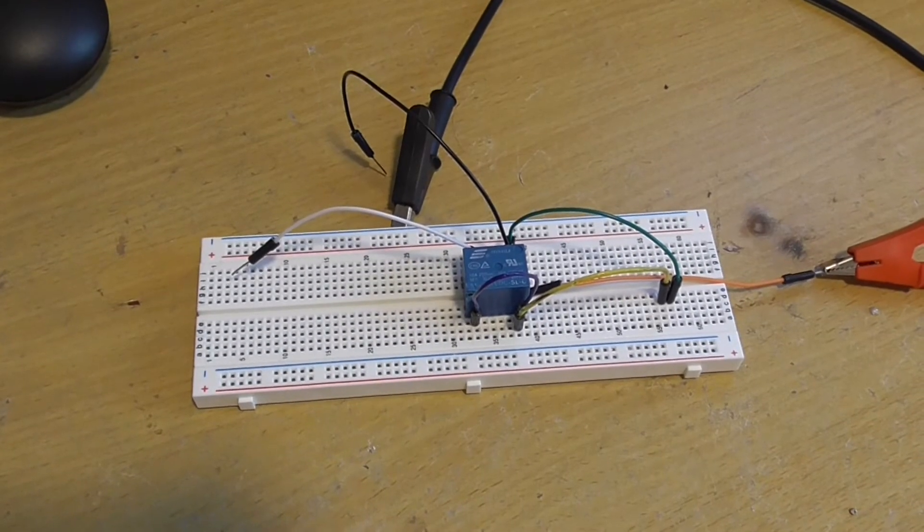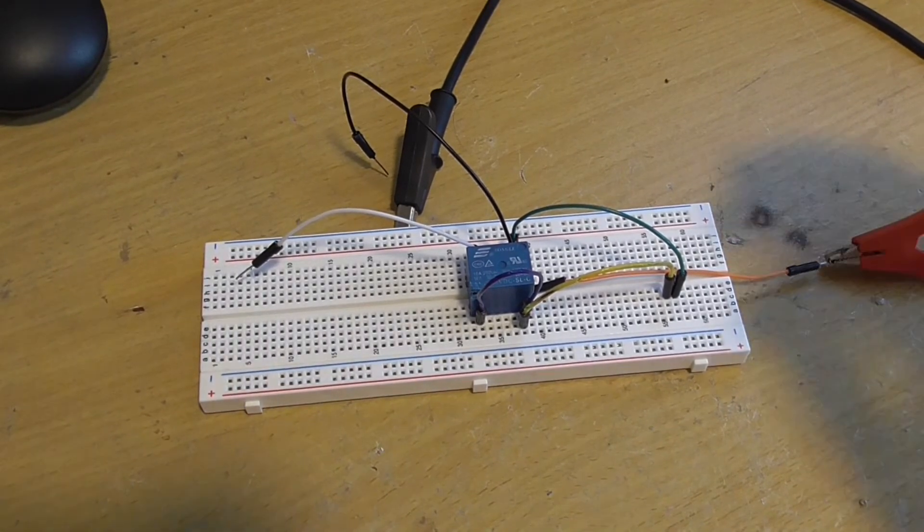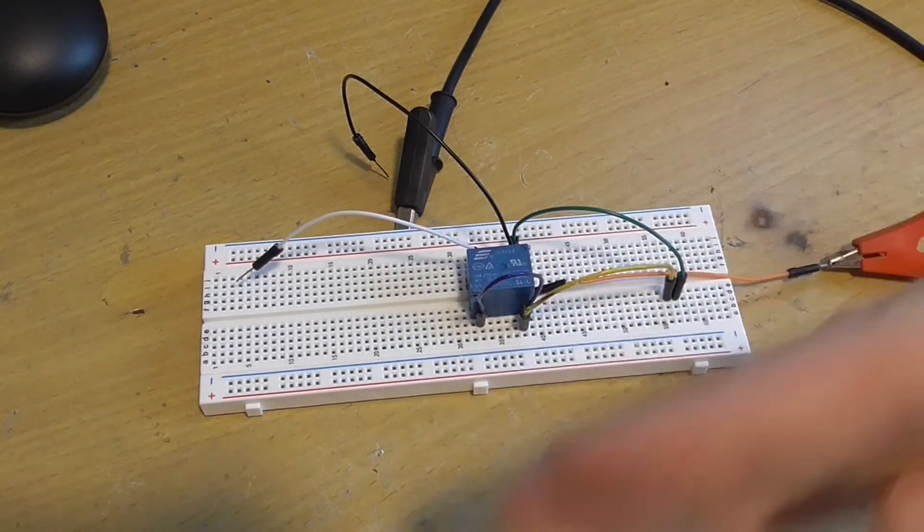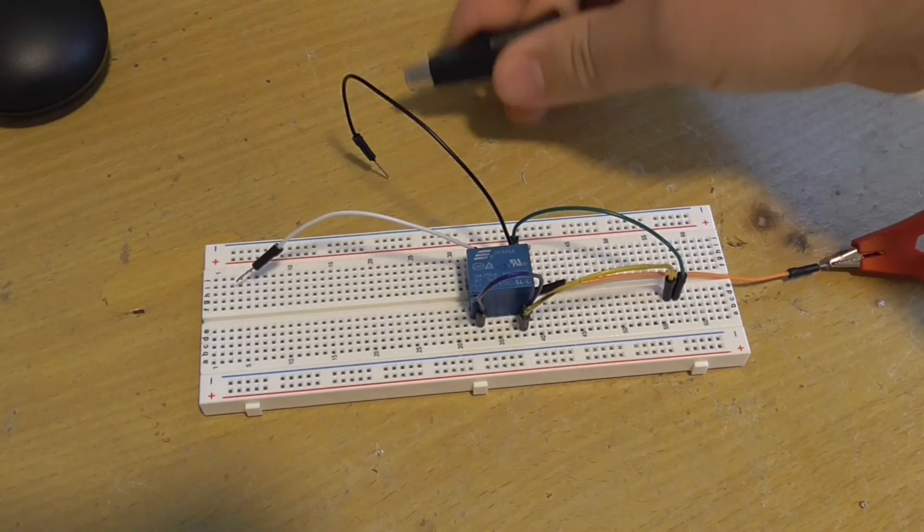So in order to understand how the transistor worked, I had to first wire it up with a relay here. I've got it wired up so it will oscillate, turning itself on and off. And when you do that it makes this noise.